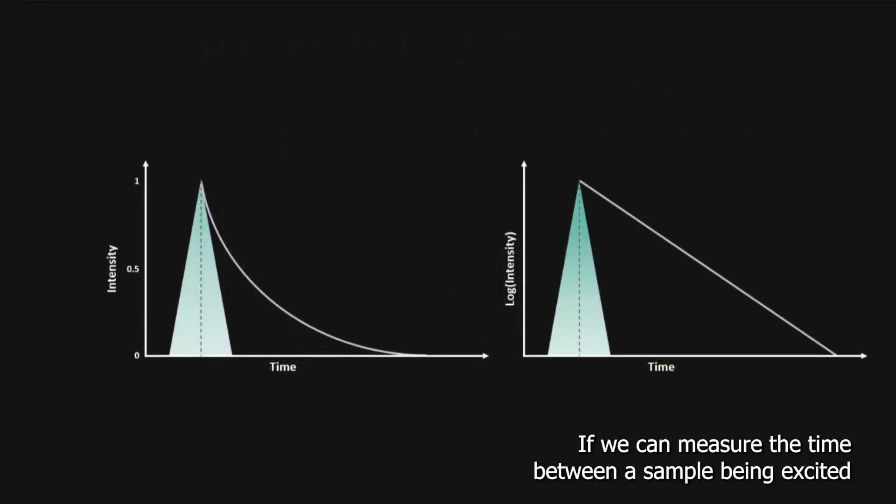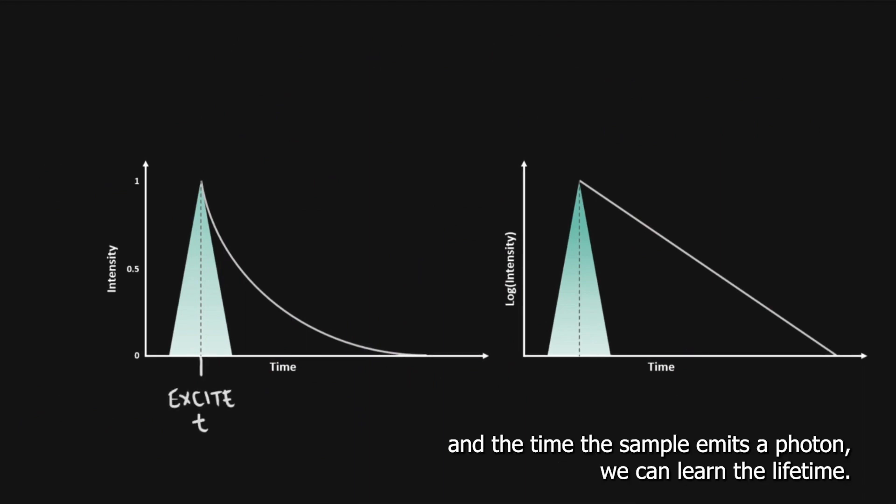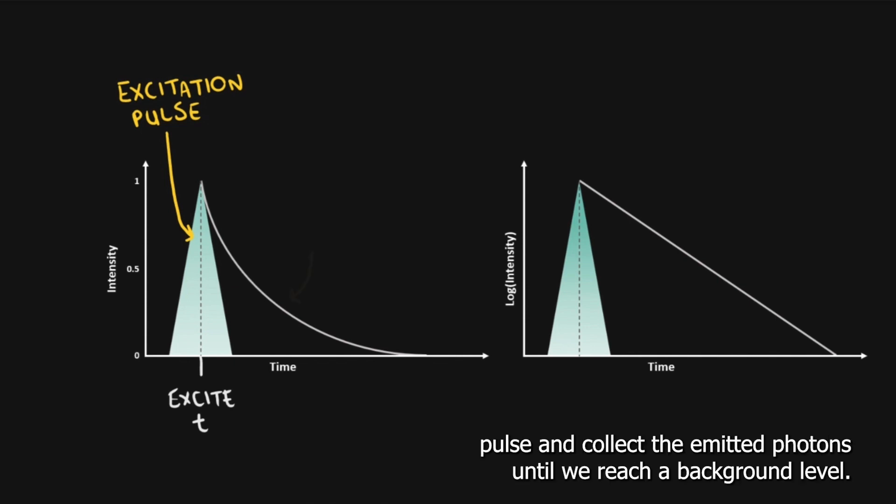If we can measure the time between our sample being excited and the time the sample emits a photon, we can learn the lifetime. But for this, we need to excite our sample with a short excitation pulse, and collect the emitted photons until we reach a background level.